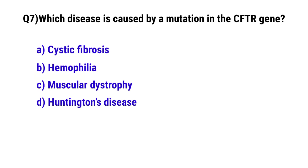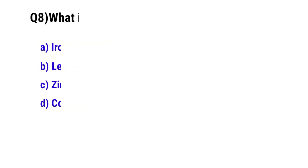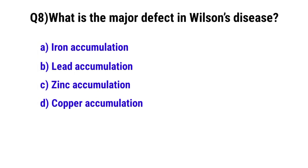Question number 7: Which disease is caused by a mutation in the CFTR gene? The correct option is A: Cystic fibrosis. Question number 8: What is the major defect in Wilson's disease? The correct option is D: Copper accumulation.